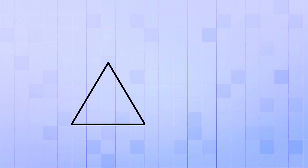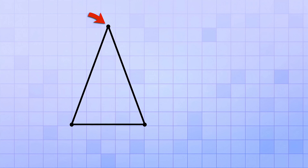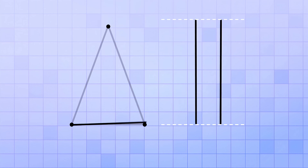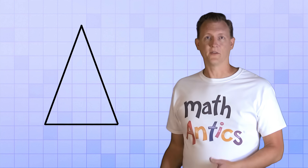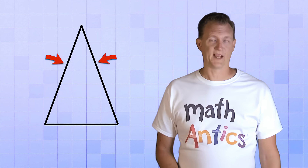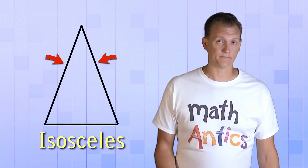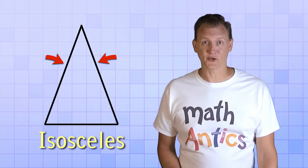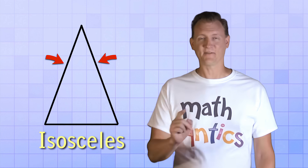To see the second possibility, let's take the top vertex of our equilateral triangle and move it up. Two of the triangle sides got stretched by the same amount, but the bottom side remained the same. Now we have a triangle that has only two equal sides, and that's called an isosceles triangle. The best way to remember that is to look at an isosceles triangle and say its name as fast as you can — isosceles!